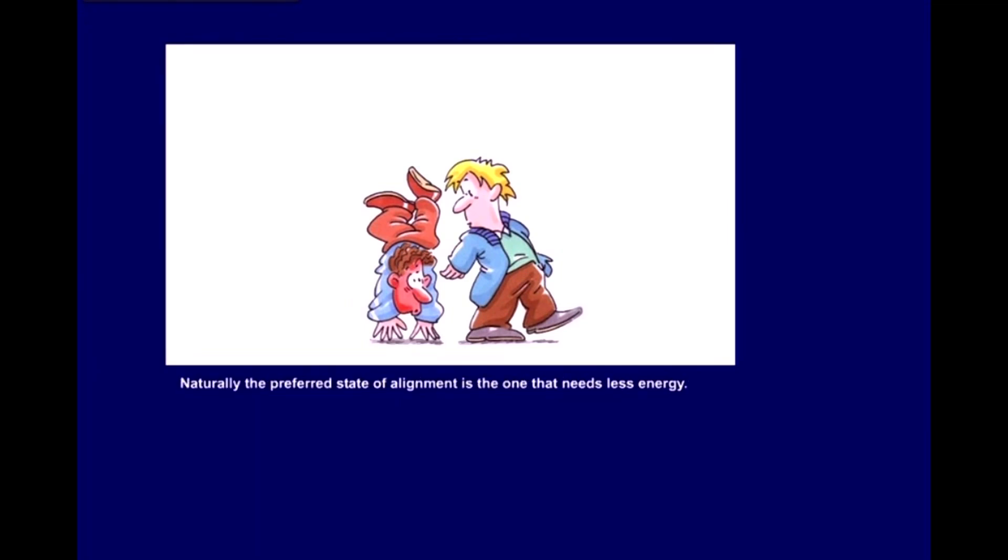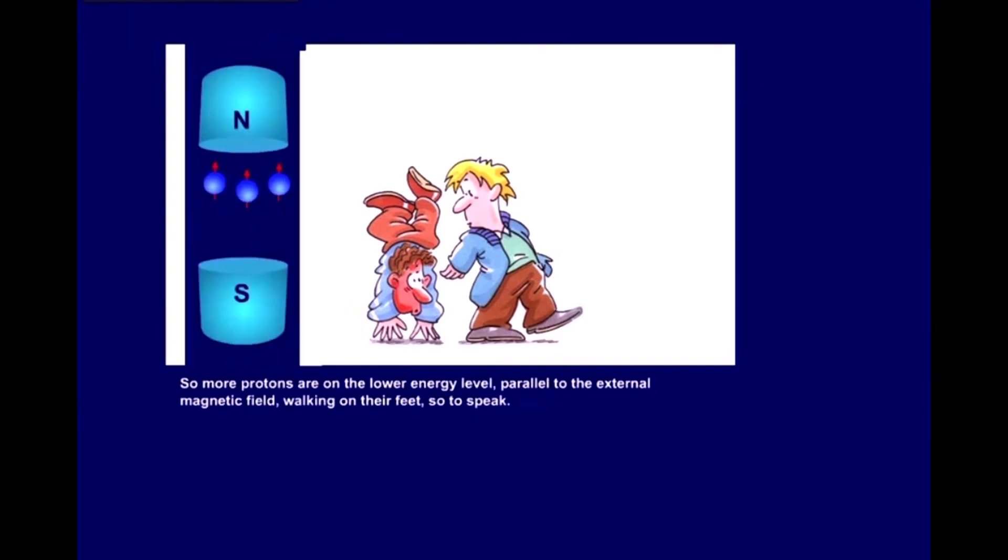Naturally, the preferred state of alignment is the one that needs less energy. So, more protons are on the lower energy level, parallel to the external magnetic field, walking on their feet, so to speak. A smaller number is on the higher energy level, anti-parallel, walking on their hands.